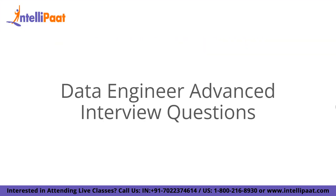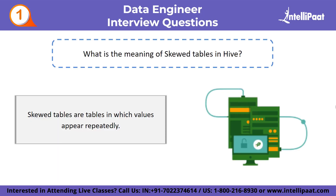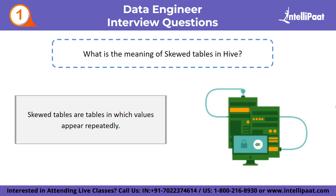Now we look at data engineer advanced interview questions. First: what is the meaning of skewed tables in Hive? Skewed tables are tables in which values appear repeatedly — the more they repeat, the more skewness there is. A table can be classified as skewed while being created in Hive. By doing so, the values will be written to different files first, and the remaining values will be written to a separate file later.